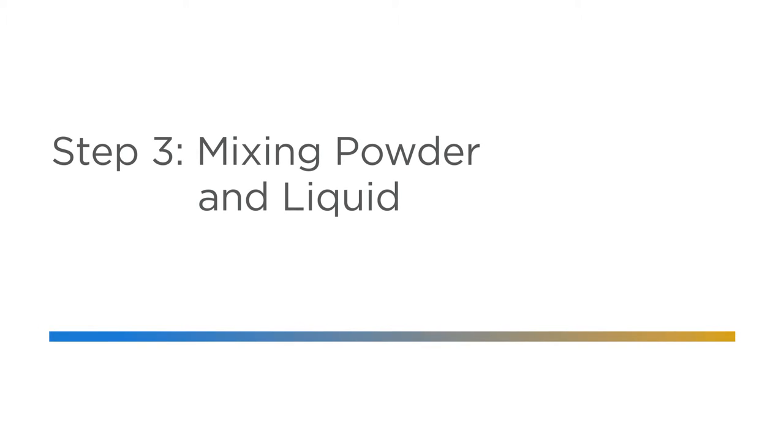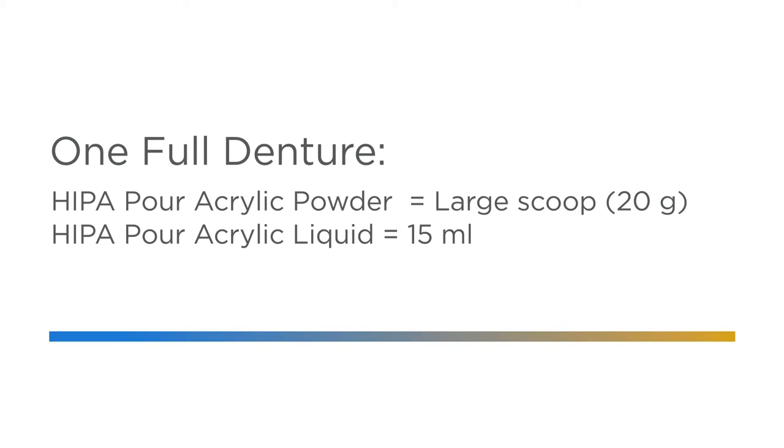The third step is to mix the powder and liquid. For the fabrication of one full denture, use one large scoop or 20 grams of HIPAA pore acrylic powder and 15 milliliters of HIPAA pore acrylic liquid measured with the HIPAA liquid vial.